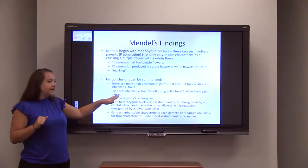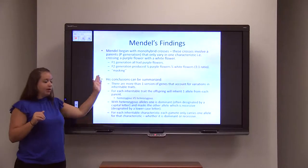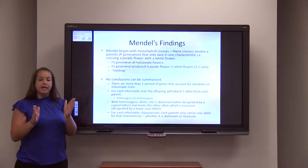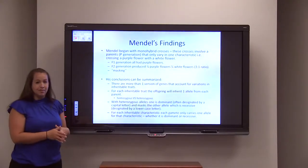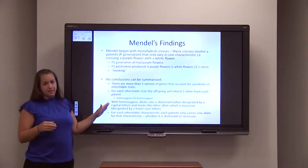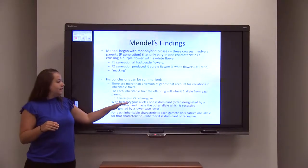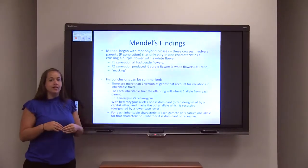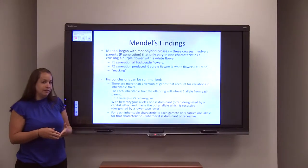For each inheritable trait, you get one allele from the mother and one from the father. If these traits are the same, they are considered homozygous. If these traits are varying, they are considered heterozygous.